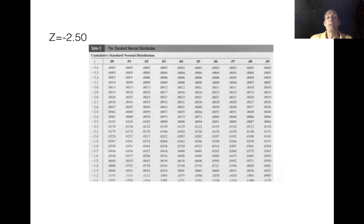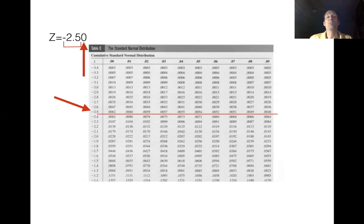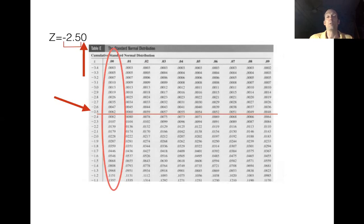Here's how we read the table: we look at the first two digits of our z score — that's negative 2.5 — and slide down the z column until we hit negative 2.5, underlining that row. Then we look at the hundredths digit, which is zero, and find the column labeled 0.00 at the top. For example, if our z score had been negative 2.53, we'd use the column for 0.03. The intersection of our row and column gives us the probability: 0.0062.